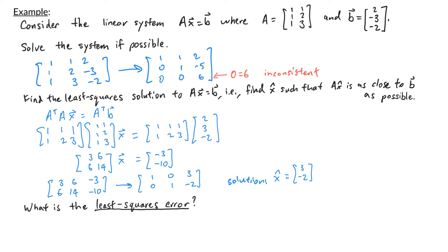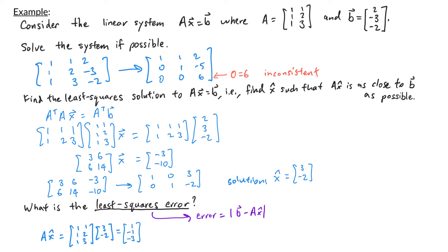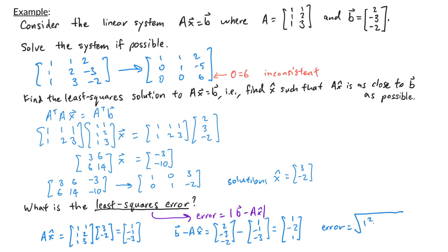Lastly, we might ask: what is the least squares error? The least squares error is how far we're off from the vector B — it's the magnitude of B minus A times x̂. First, I calculate A times x̂: the matrix [[1,1],[1,2],[1,3]] times [3,-2] gives the vector [1, -1, -3]. Then I take the difference B minus A times x̂: [2,-3,-2] minus [1,-1,-3] equals [1,-2,1]. Finally, the error is the magnitude of this difference, which is the square root of 1² + (-2)² + 1² = square root of 6.